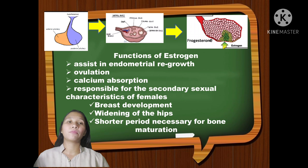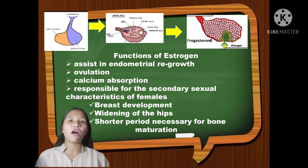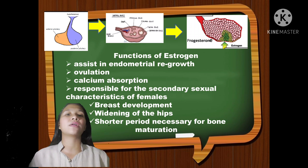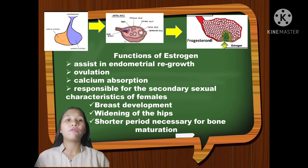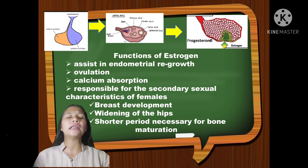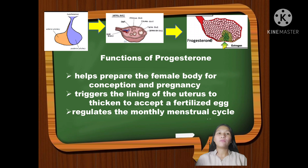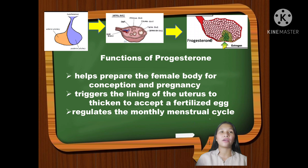Estrogen is the reproductive hormone in females with functions including assisting in endometrial regrowth, ovulation, and calcium absorption. It is also responsible for secondary sexual characteristics like breast development, widening of hips, and shorter period necessary for bone maturation. It also helps control the menstrual cycle and is important in childbearing. Progesterone helps prepare the female body for conception and pregnancy, triggers the lining of the uterus to accept a fertilized egg, and regulates the monthly menstrual cycle.